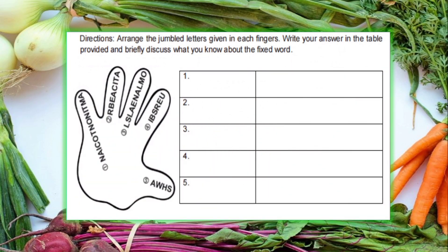So, in this activity, I would like to ask you to use all your senses, especially your thinking, by arranging the jumbled letters in each finger. Then you are going to write your answer and discuss briefly about what you know in the fixed word. That's amazing! Very good! Let's continue.